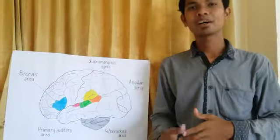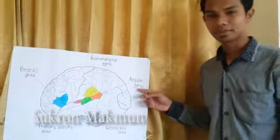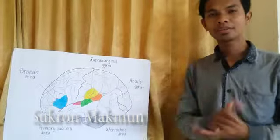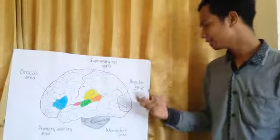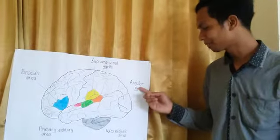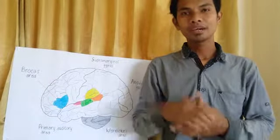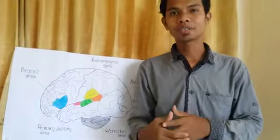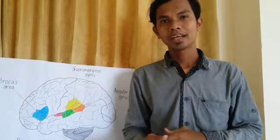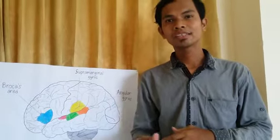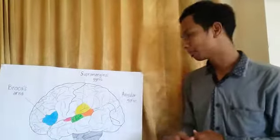In this part, I will explain about the angular gyrus. Do you know what the angular gyrus is? The angular gyrus is a region of the brain in the parietal lobe that lies near the superior edge of the temporal lobe.